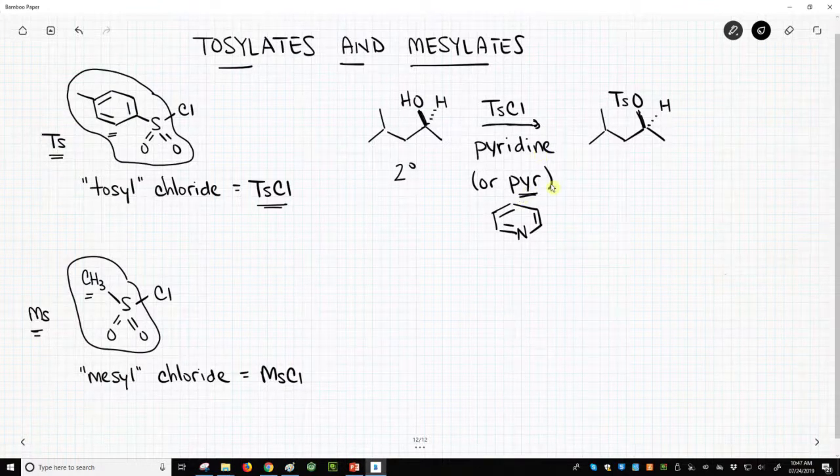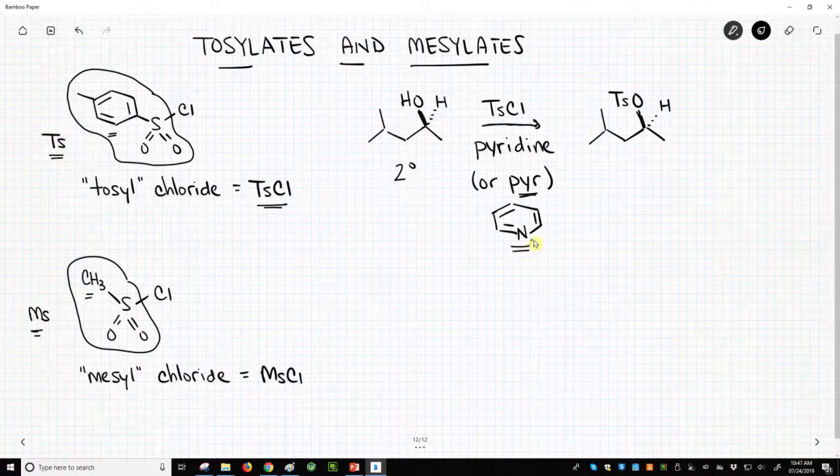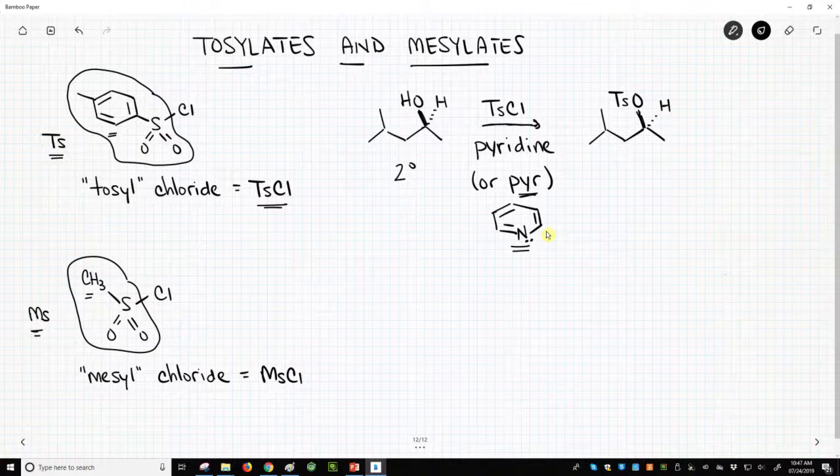That's our reagent to make a tosylate, and pyridine. Sometimes people write pyridine as PYR. This is the structure of pyridine. This nitrogen has a lone pair. It's a little bit basic because this reaction forms HCl, and we need a base to kind of soak up and react with that, neutralize that HCl.